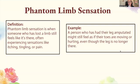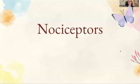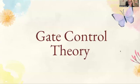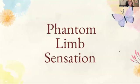Phantom limb sensation is when someone who has lost a limb still feels like it's there, often experiencing sensations like itching, tingling, or pain. A person who has had their leg amputated might still feel as if their toes are moving or hurting, even though the leg is no longer there. Now let's practice: nociceptors, gate control theory, phantom limb sensation.